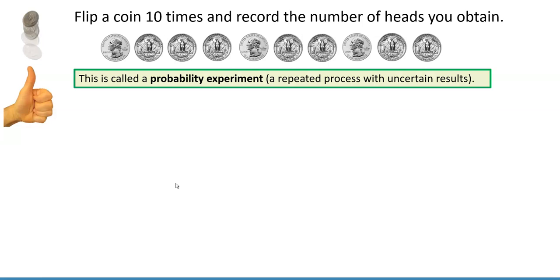A probability experiment is a repeated process with uncertain results. So we repeatedly flip a coin, but we're not sure what the result or the outcome is going to be every time.